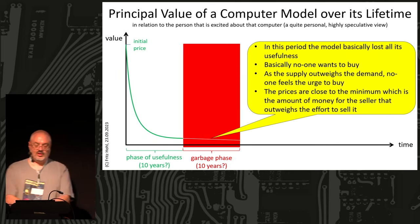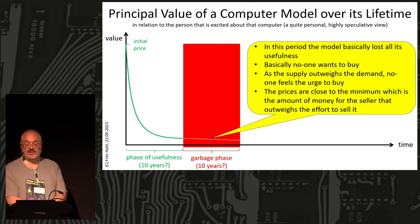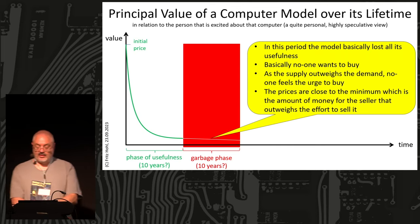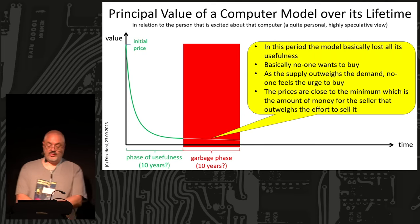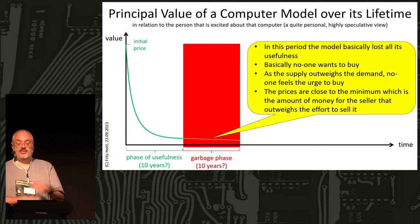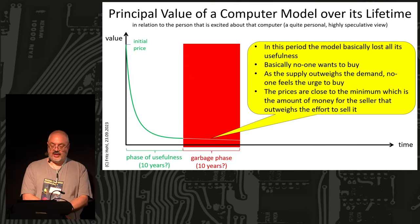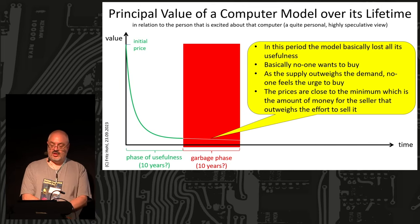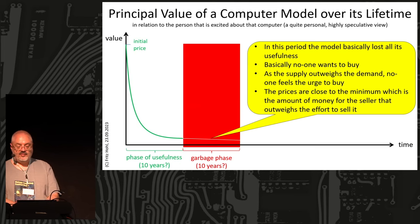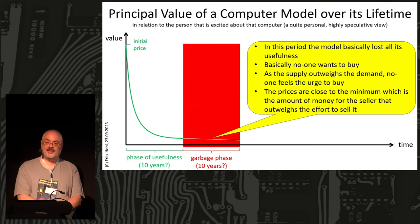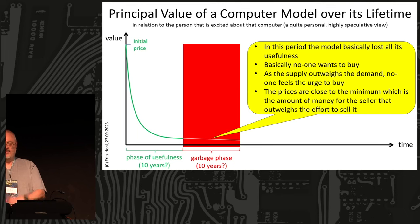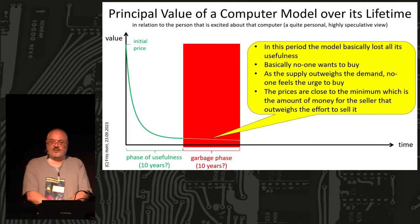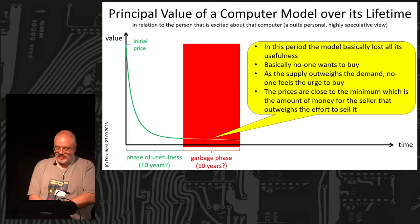The next phase is what I would call the garbage phase. In this phase the device has basically lost all its usefulness. No one wants to buy it and since supply outweighs demand, no one feels the urge to buy because there are so many on the market. Prices are close to a minimum, which is determined by the amount of money for the seller that outweighs the effort to sell — it's a certain minimum point.